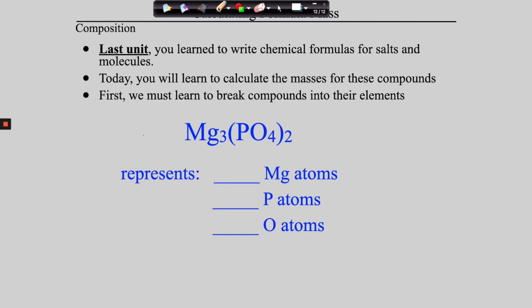The question is: how many? We know from the three that we have three magnesium atoms. How many phosphorus atoms? This is where we need to realize that the two distributes through the parentheses. Each PO₄ has one phosphorus, but there are two of them, so we have two phosphoruses. Each PO₄ has four oxygens, and there are two of those, so we have eight oxygens — two phosphorus atoms and eight oxygen atoms.